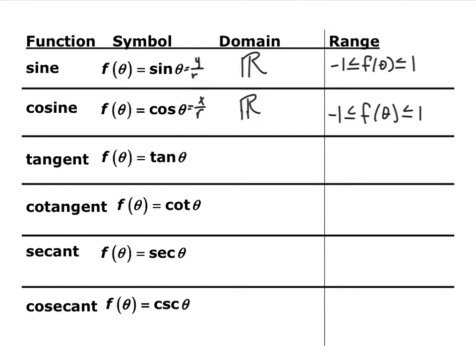For the ranges, both sine and cosine have ranges of negative 1 to 1, inclusive. If you think of the unit circle, for sine the biggest y coordinate is 1 at pi over 2, and the lowest is negative 1 at 3pi over 2. Similarly, cosine maxes out at 1 at 0 and 2pi, and minimizes at negative 1 at pi.